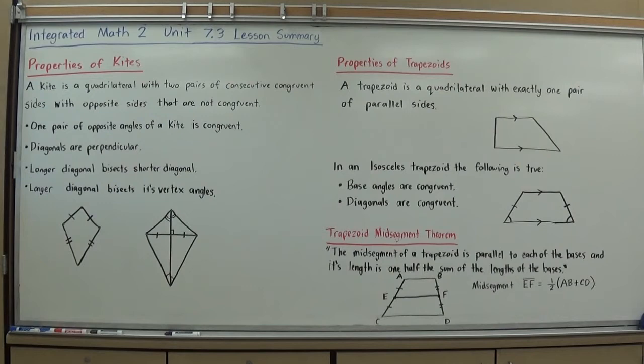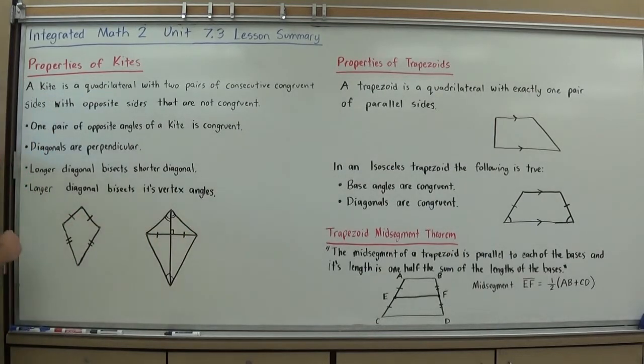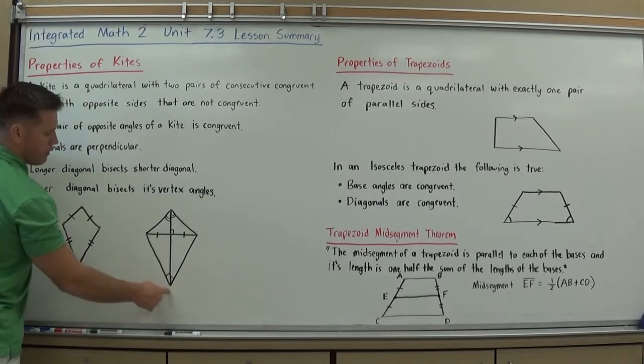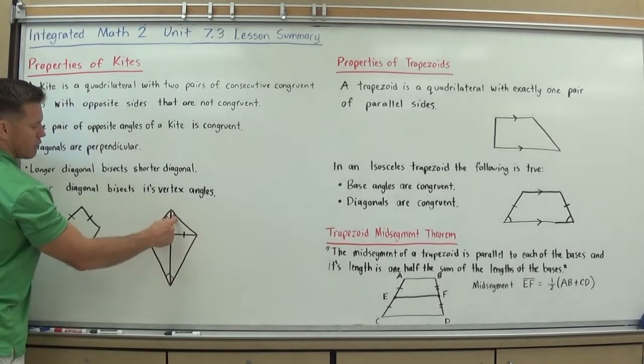And here's where it can get a little confusing to remember, but typically what I say is the longer diagonal that you have, because you're always going to have one diagonal that's longer than the other, and the longer diagonal bisects the shorter diagonal. So your shorter diagonal should be split into two congruent parts, and the angles that your longer diagonal bisects or intersects create congruent angles.